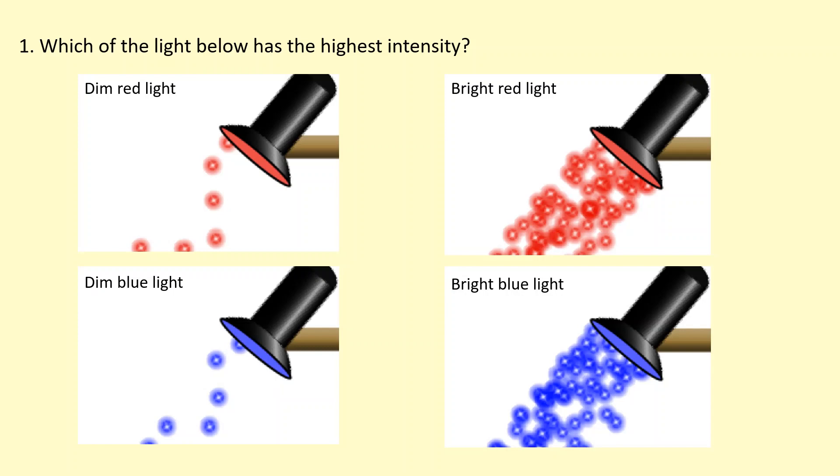The answer to the question is it's the bright blue light which is the most intense. The reason for this is blue has a shorter wavelength and a higher frequency than red. So that means each of the photons here will have a higher energy because the equation equals hf or hc over lambda. So each photon has more energy.